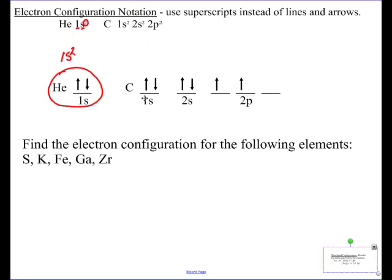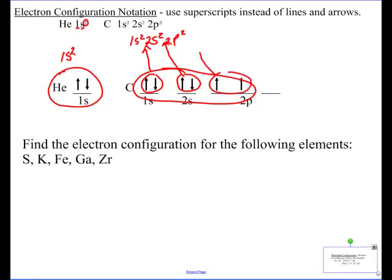Instead of all this, we write for carbon 1s2, 2s2, 2p2. And again, two electrons in the 1s there you go right there, two electrons in the 2s there you go right there, and two electrons in the 2p.